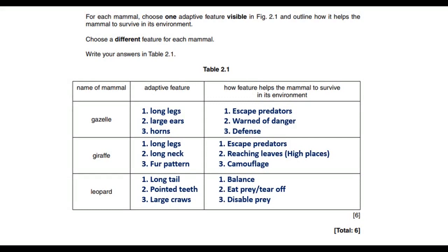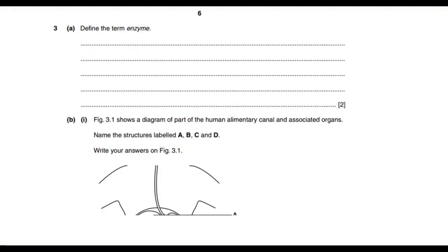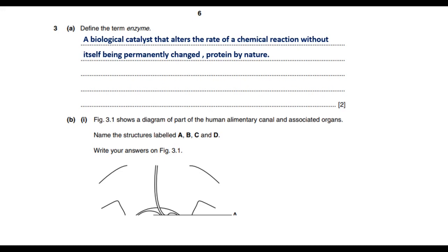Let's jump to the next question: define the term enzyme. An enzyme is a biological catalyst which is protein by nature, and its purpose is to speed up the rate of chemical reactions. The two important features of an enzyme are that it's a catalyst and it's protein by nature. We can draft the definition: a biological catalyst that alters the rate of a chemical reaction without itself being permanently changed, and it is protein by nature.